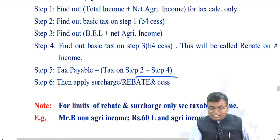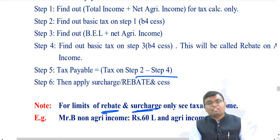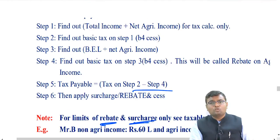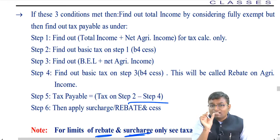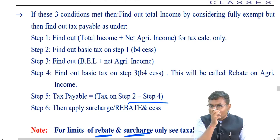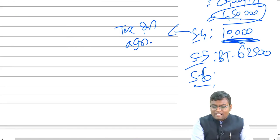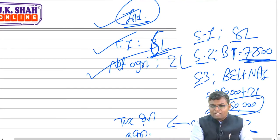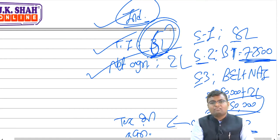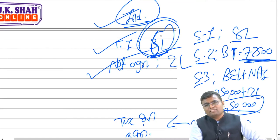For determining whether rebate or surcharge is applicable, you do not look at the combined figure — you look only at the taxable income, which is total income as per the Income Tax Act. In this example, rebate is not applicable because total income is ₹6 lakh, which is more than ₹5 lakh.